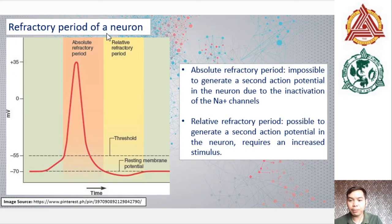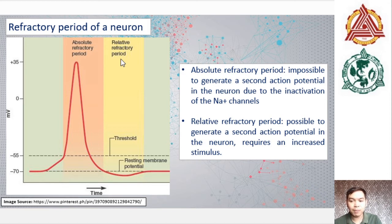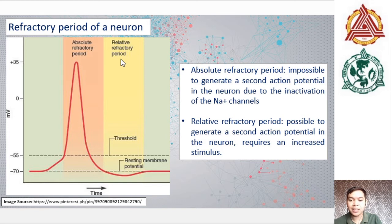Another thing to consider is the refractory period of the neuron, which can be divided into two components. The first is the absolute refractory period, during which it is impossible to generate a second action potential due to the inactivation of sodium channels. The second is the relative refractory period, during which any depolarizing response — such as sodium entry essential for action potential — must be able to overcome the hyperpolarizing response due to the loss of potassium ions inside the cell.